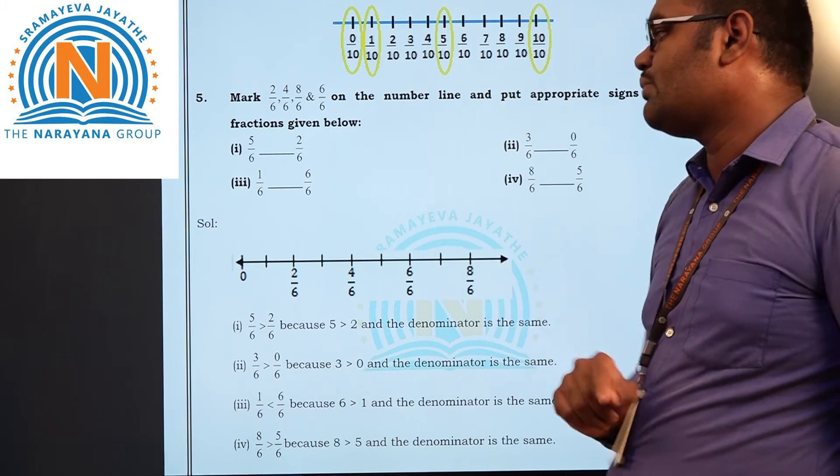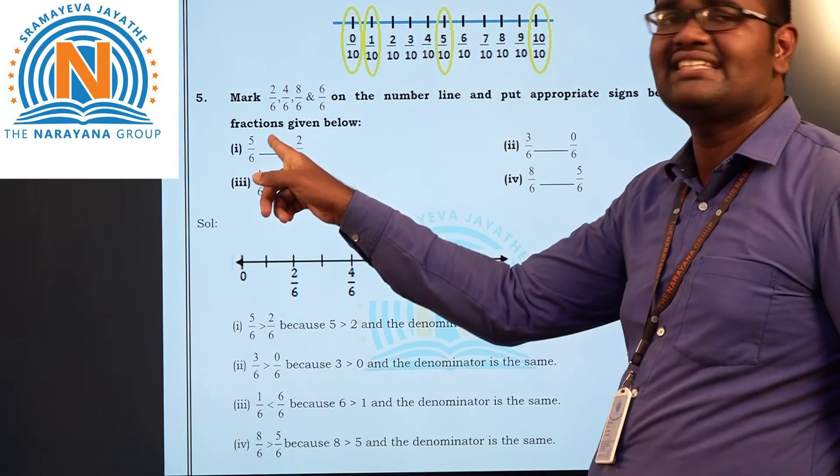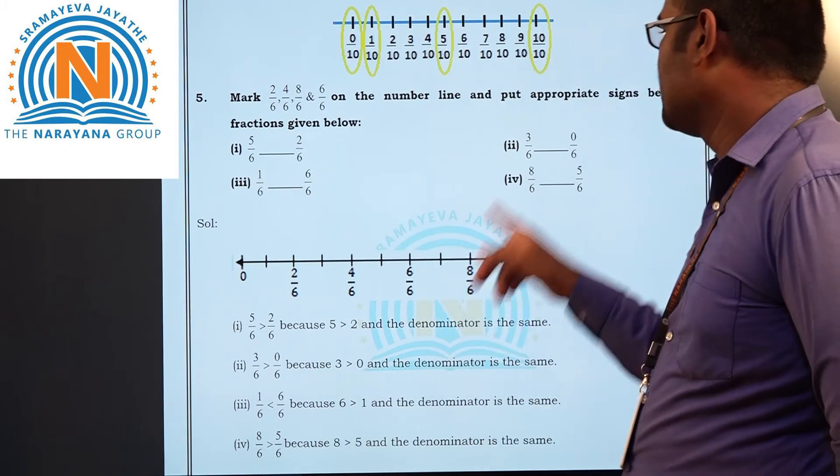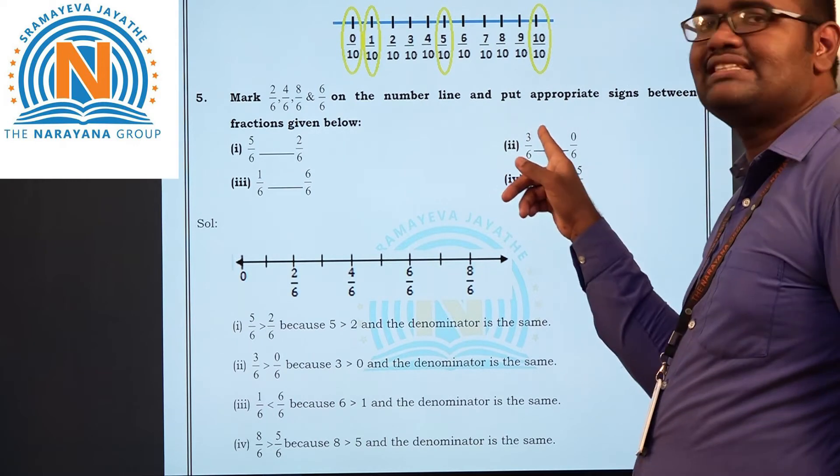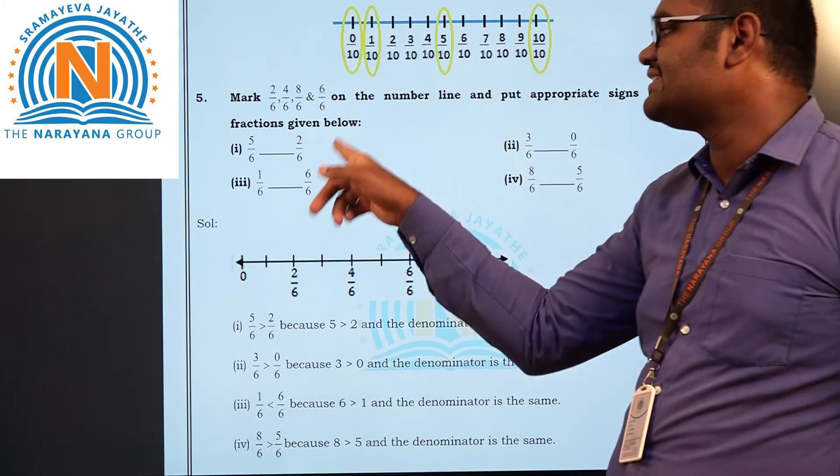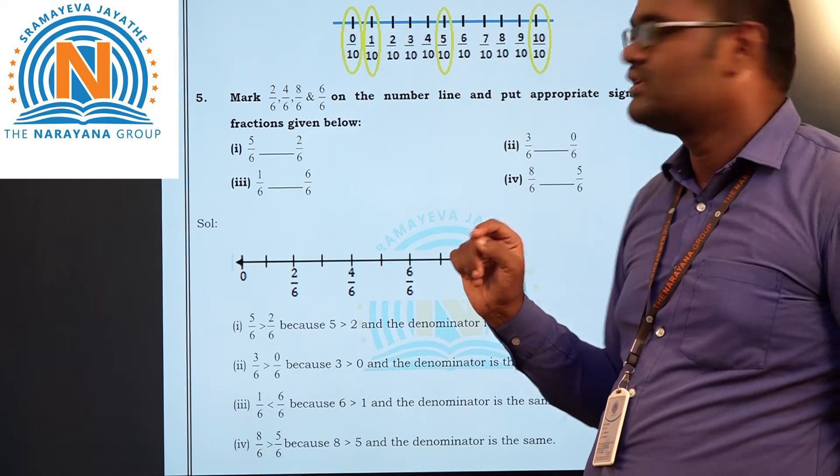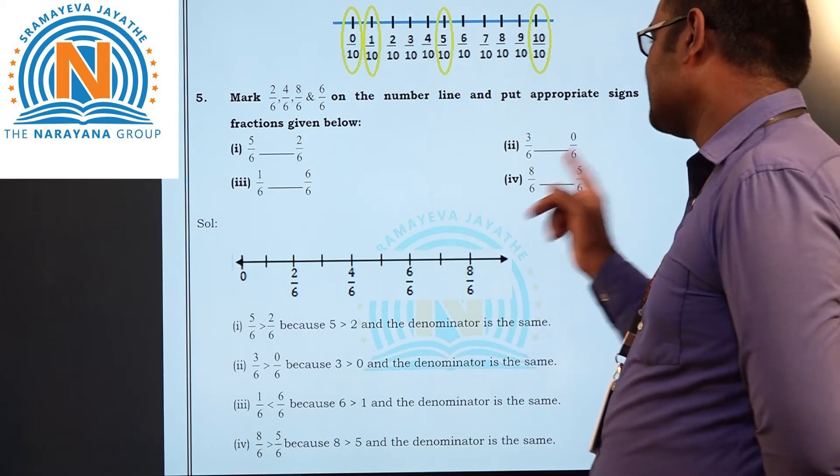5 by 6 and 2 by 6. 5 by 6 is the greater one. 3 by 6, 0 by 6. 3 is greater one. 1 by 6, 6 by 6. 6 is greater one. 8 by 6, 5 by 6. 8 is greater one.